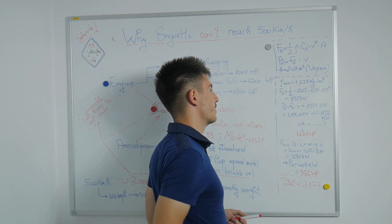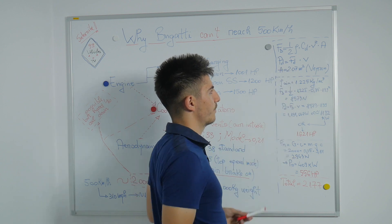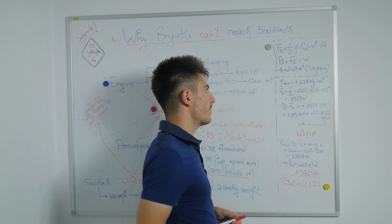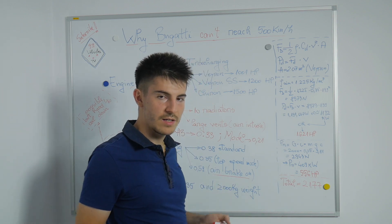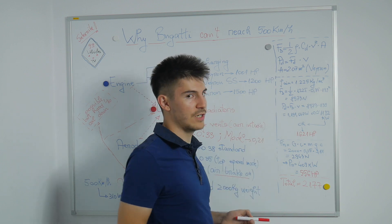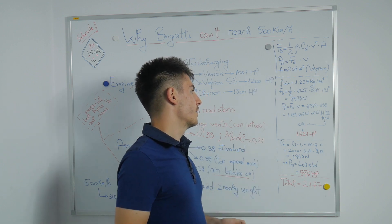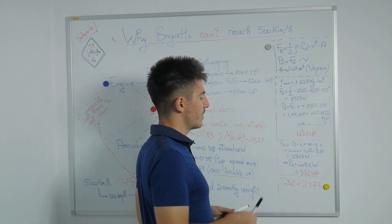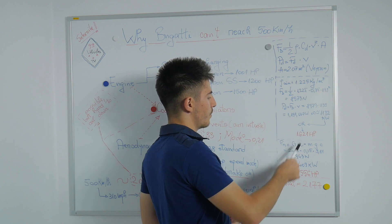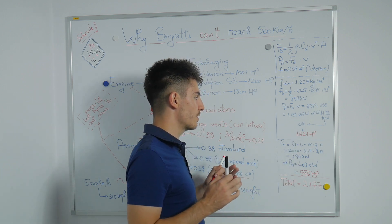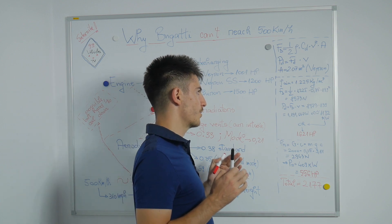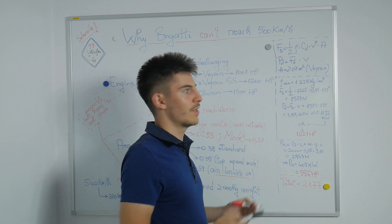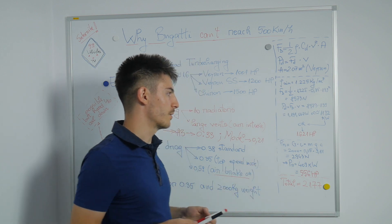We also have the frontal area from the Bugatti Veyron. I haven't found any data for the frontal area of the Chiron. Doing the math, I have come to the conclusion that we need 1,621 horsepower just to overcome the aerodynamic drag forces of a Bugatti Chiron, which could go over 500 kilometers per hour if they will ever make this possible.